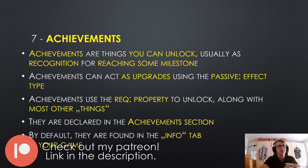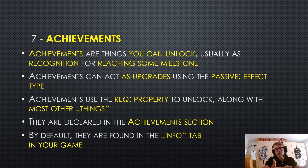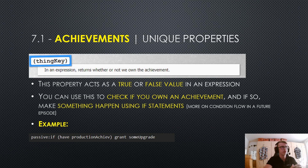Welcome to episode 10 of the idle game maker tutorial series. In this episode we are going to talk about achievements. Achievements are things you can unlock, usually as a recognition for reaching some kind of milestone — for example, earning a certain amount of a resource or getting some kind of building's production above a certain amount. Achievements can also act as upgrades using the passive effect type, and they use the requirement property to unlock. They are declared in the achievement section and by default are found in the info tab in your game.